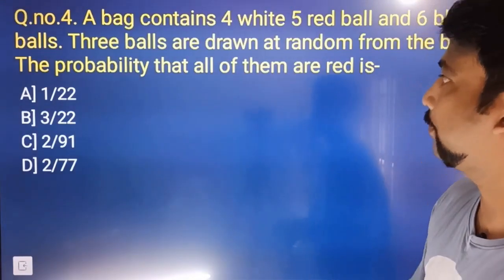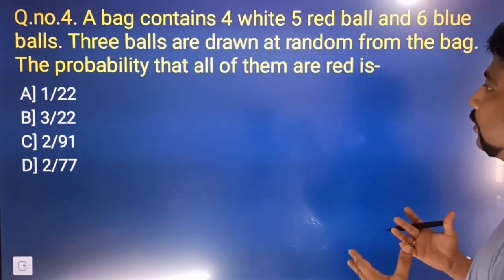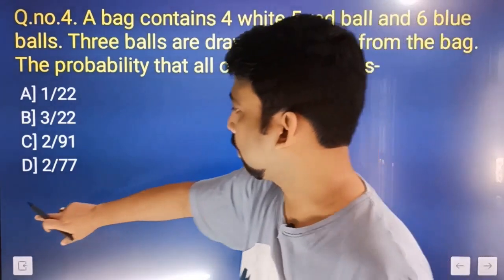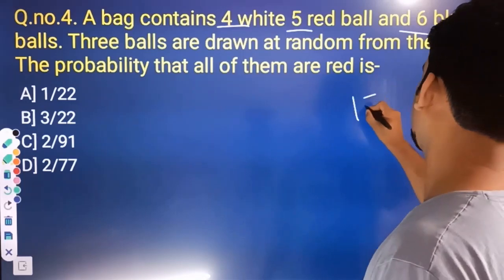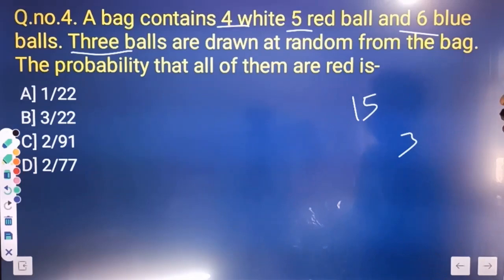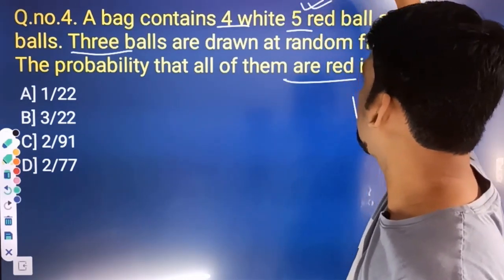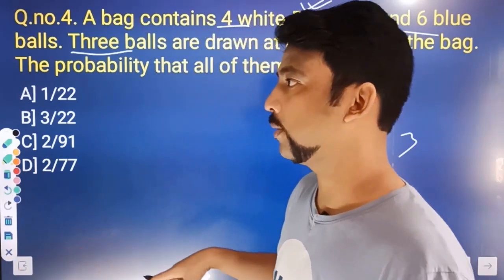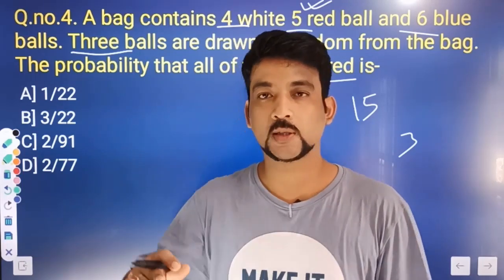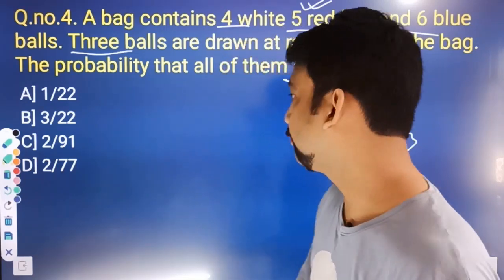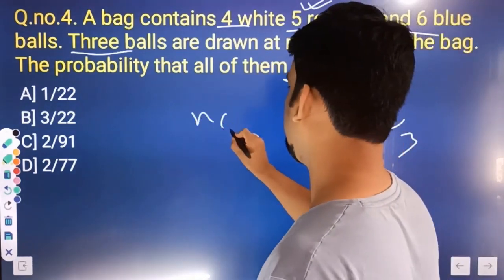So this is a bag — it has white balls, red balls, and blue balls. Three balls are randomly selected from the bag and we need the probability that all of them are red. Total balls: 4 plus 5 plus 6. We have three draws — all of them red. The formula we use is the combination formula, NCR, which we have already discussed in the video.